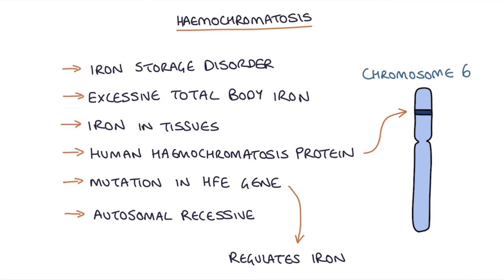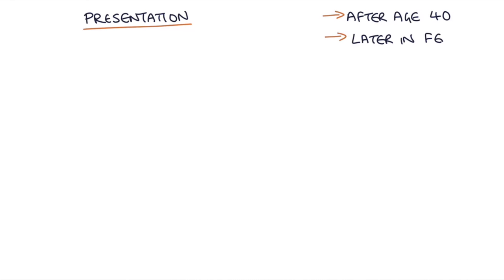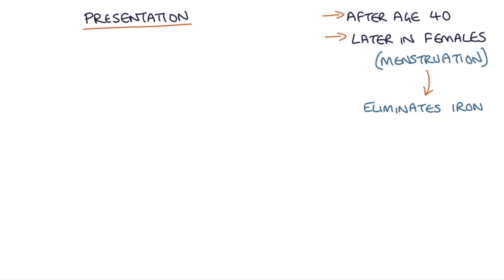Hemochromatosis usually takes some time before enough iron builds up to become symptomatic. It usually presents after the age of 40, and it presents later in females due to menstruation acting to regularly eliminate blood and iron from the body, so it takes longer for those iron stores to build up. These symptoms usually come on after the menopause.